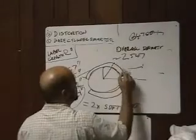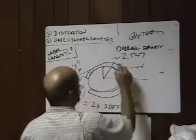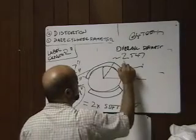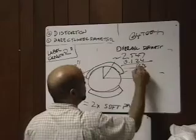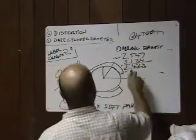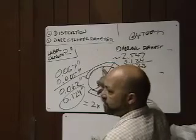So if we take now, then taking away twice the soft part, 0.124, let's go ahead and do that. We'll have that number, 0.124.